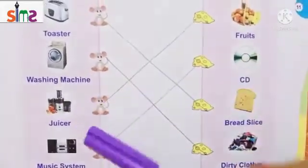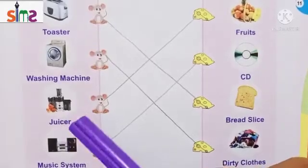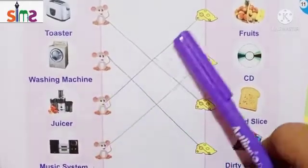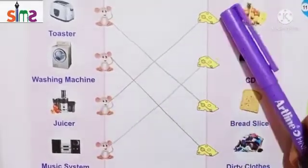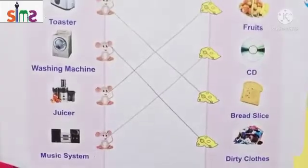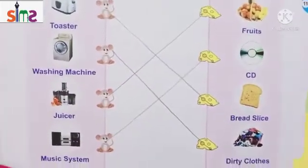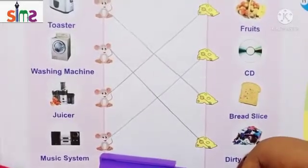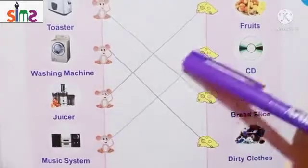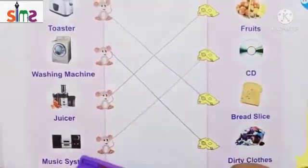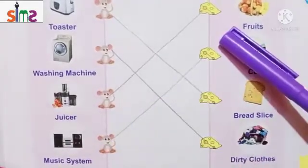The next machine is the juicer. The juicer is for making juice. The next machine is the music system. We use the music system to play a CD. We will match the CD with the music system.